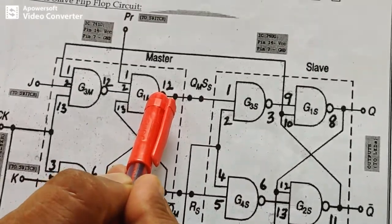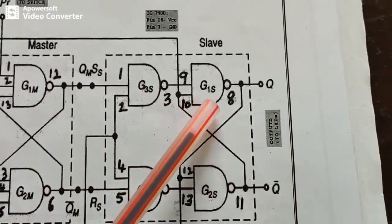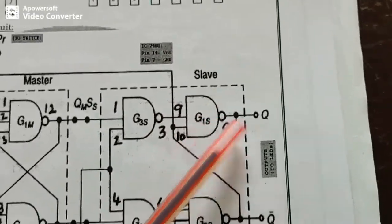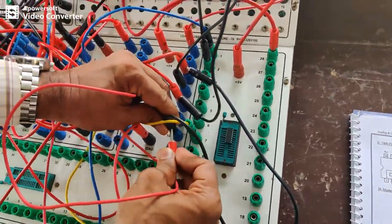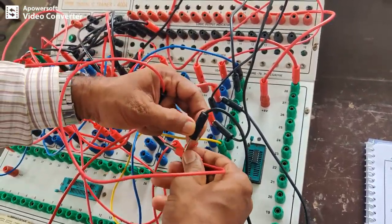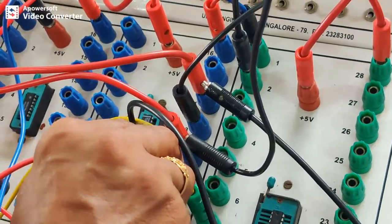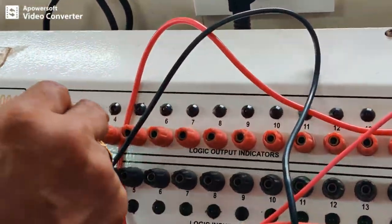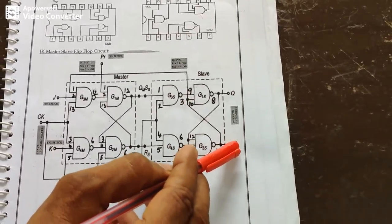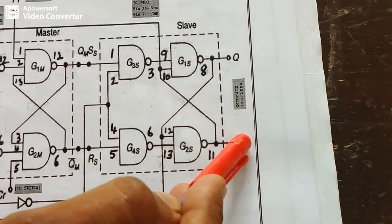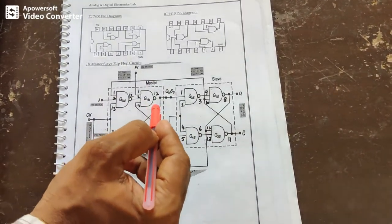After completing all these connections, the output is taken from pin 8 of the 4th IC. There is also a negated output available but we will observe only the non-inverted output. This completes all the different connections for the JK master-slave circuit and now we will verify the output.